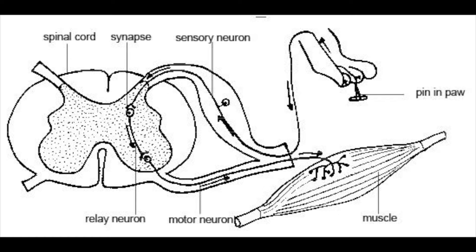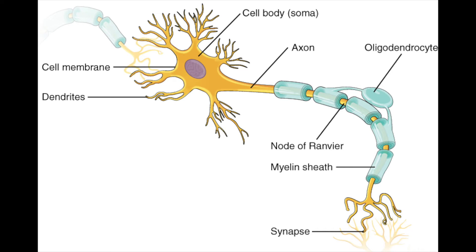Now if we go through the process: the stimulus is the thing that happens, so this might be touching the hot hob — touching something hot is the most common example — where you have to retract your finger away quickly. The sensory receptor in the skin of your finger detects this, and sends impulses down the sensory neuron, which goes to the relay neuron in the CNS.